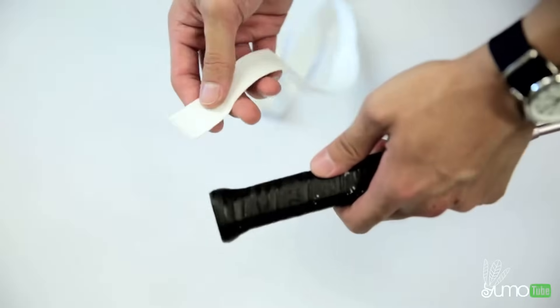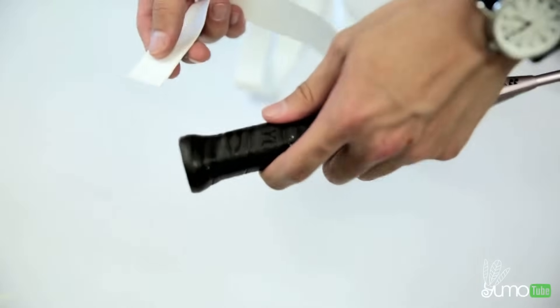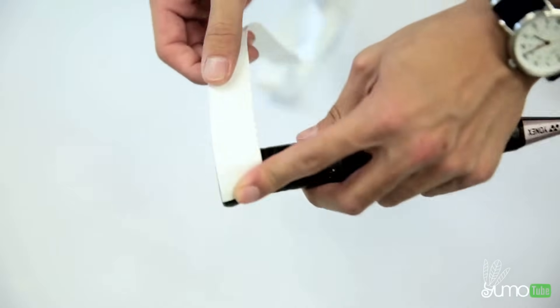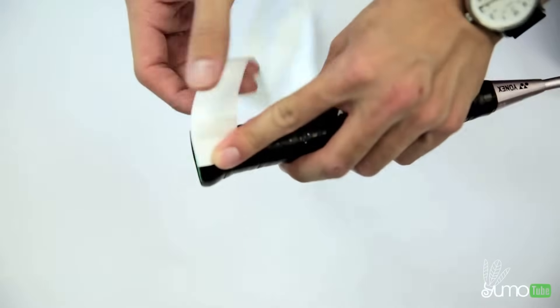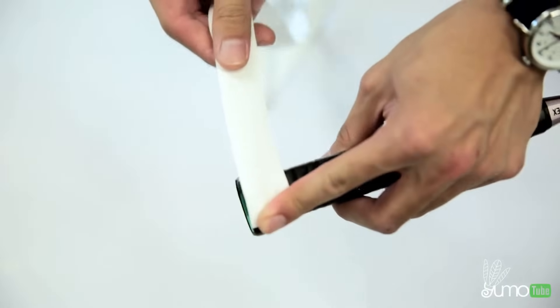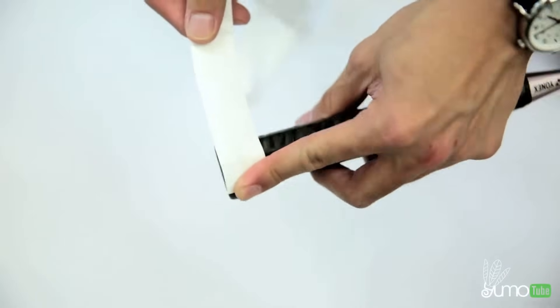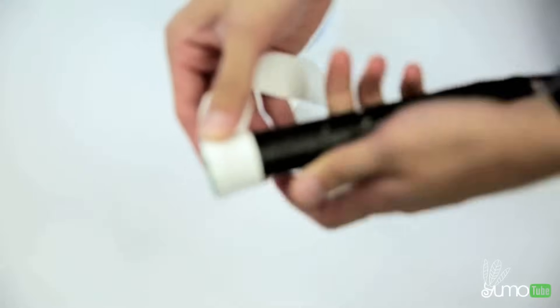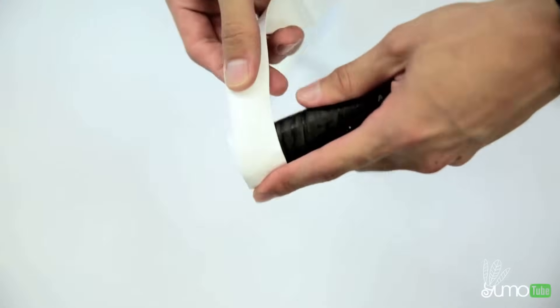So if you want to start with the flat square end instead, this is how you would do it. So same thing, just place it at the edge. I would give it a bit of a tug so that it's easier to put on without any creases. I would go around once just to keep it in place, and then you would start going down at an angle.